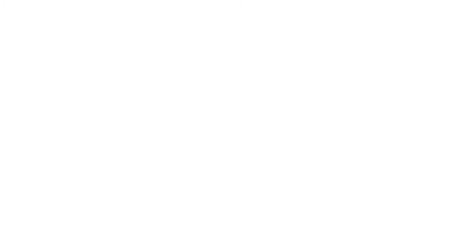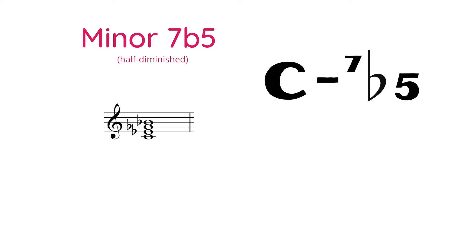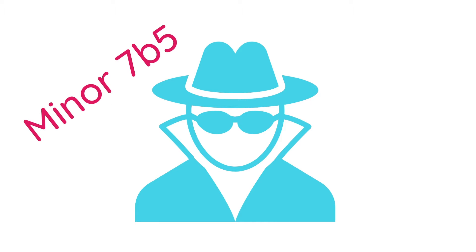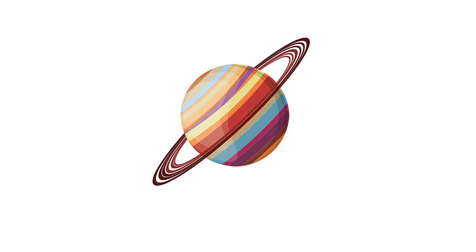Next in line is the minor seven flat five. Now it's totally a mouthful, but it describes exactly what it is. Notation for this chord symbol is either C-minus-7-flat-5, which is the shorthand way, or Cmi7-flat-5. This chord is actually a double agent because it's also known as half diminished. The reason is that the base of the chord is a diminished triad followed by a major third on top — so half of it is diminished and half of it isn't. The shorthand looks like the planet Saturn tilted on its side, or a degree sign with a slash through it. You'll most likely see these chords written as minor seven flat five instead of that symbol.